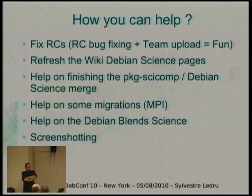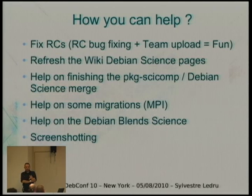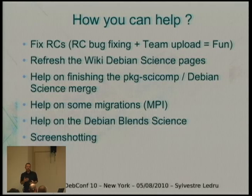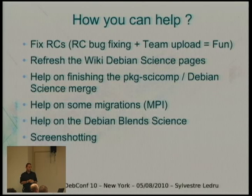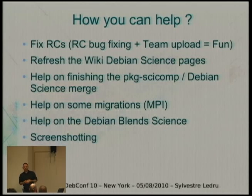The Debian Science team needs help. Fixing RC bugs is great. We should update documentation on our website and wiki about the various teams, because it's very confusing for people coming into Debian to see that we have basically four teams — the wiki is not very clear about this. We have plenty of pages. We should work together to clean up this mess and show the world that we're clear about what we want to do in science. The merge obviously needs to be finished. We still have some MPI migration to do, and we still need help on Blend Science to update everything.